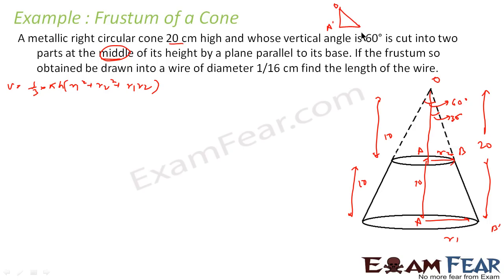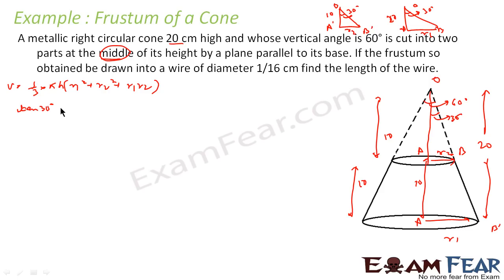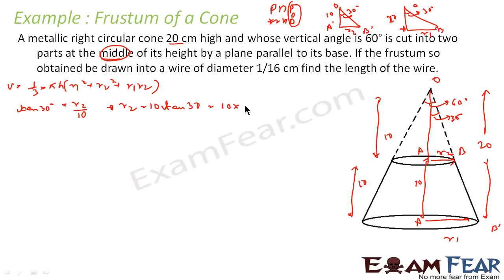In triangle OA'B', the angle is 30 degrees and the height is 10. Using tan(30°) = r2 / 10, we get r2 = 10 × tan(30°) = 10 × (1/√3) = 10/√3 centimeters.